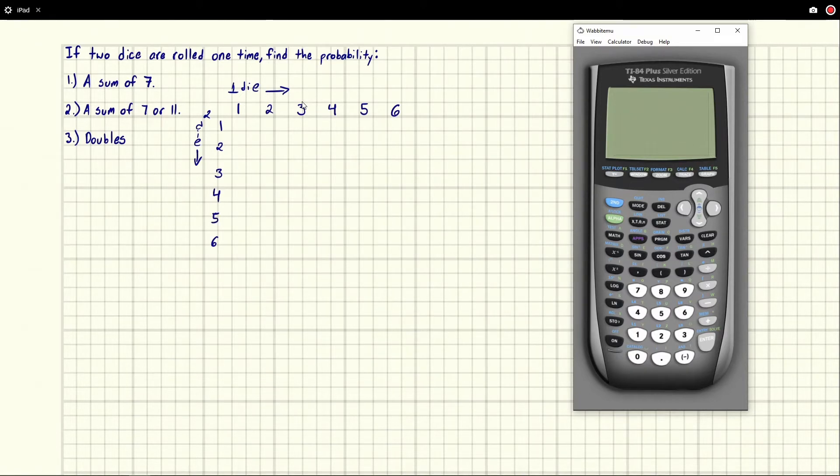So if we were to add these up, we can get all the sums that would appear in the middle, right? So if I rolled a one on the first die and a one on the second die, I would get a two. And then if I rolled a two on the first die and a one on the second die, I would get a three. And I think you can see where this is kind of going. We would get a four, and then a five, then a six, then a seven.